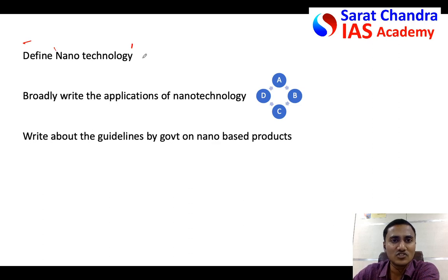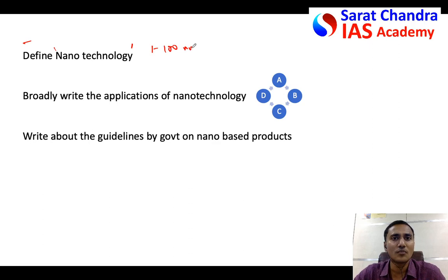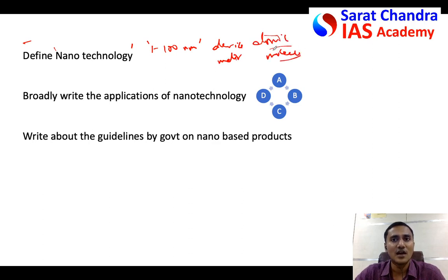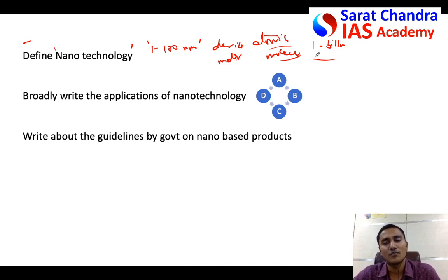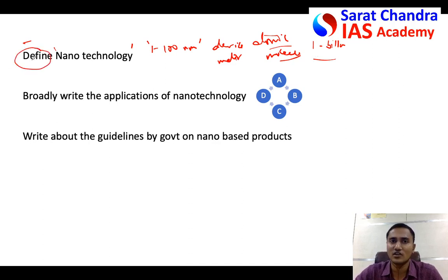Define nanotechnology: it is essentially the handling or manipulation of material at the size of one to two hundred nanometers — at the atomic or molecular scale, meaning one billionth of a meter. If you are handling, manipulating material, or manufacturing devices at that scale, that is called nanotechnology.